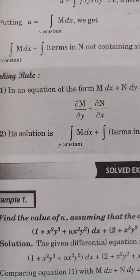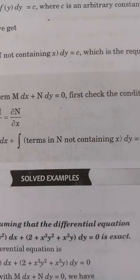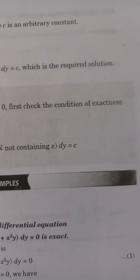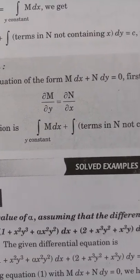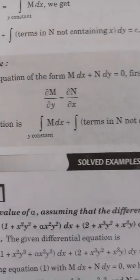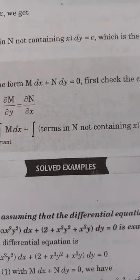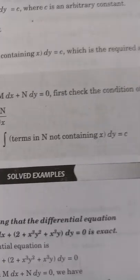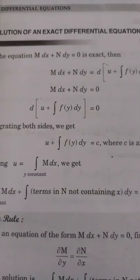Working rule: For an equation of the form M dx + N dy = 0, first check the condition of exactness, i.e., ∂M/∂y = ∂N/∂x. Then the solution is: ∫M dx (treating y as constant) + ∫(terms in N not containing x) dy = c.